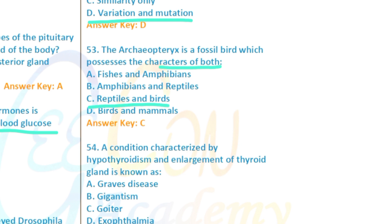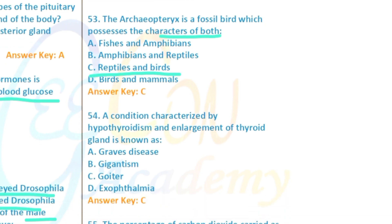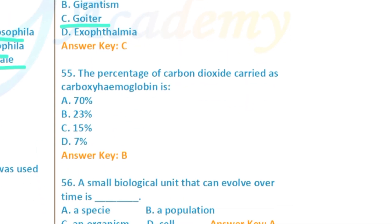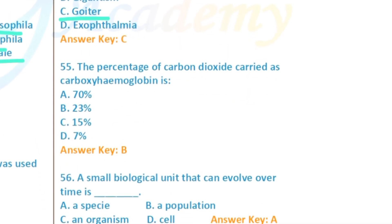Question 53: Archaeopteryx is a fossil bird that possessed characteristics of both reptiles and birds. Question 54: A condition characterized by hypothyroidism and enlargement of the thyroid gland is known as goiter — option C is ticked.